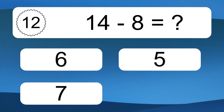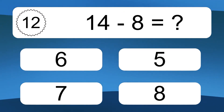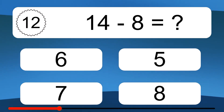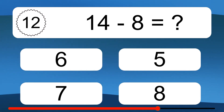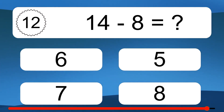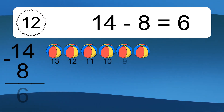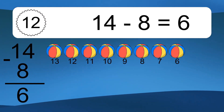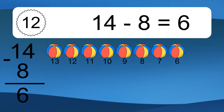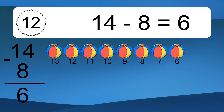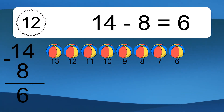14 minus 8 equals what? 14 minus 8 equals 6. Let's count it: 13, 12, 11, 10, 9, 8, 7, 6.